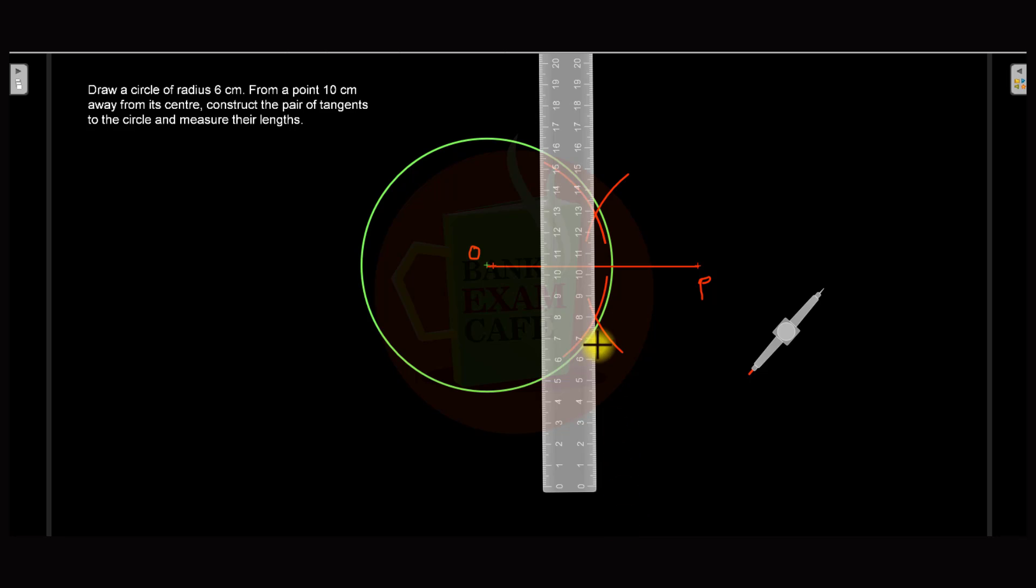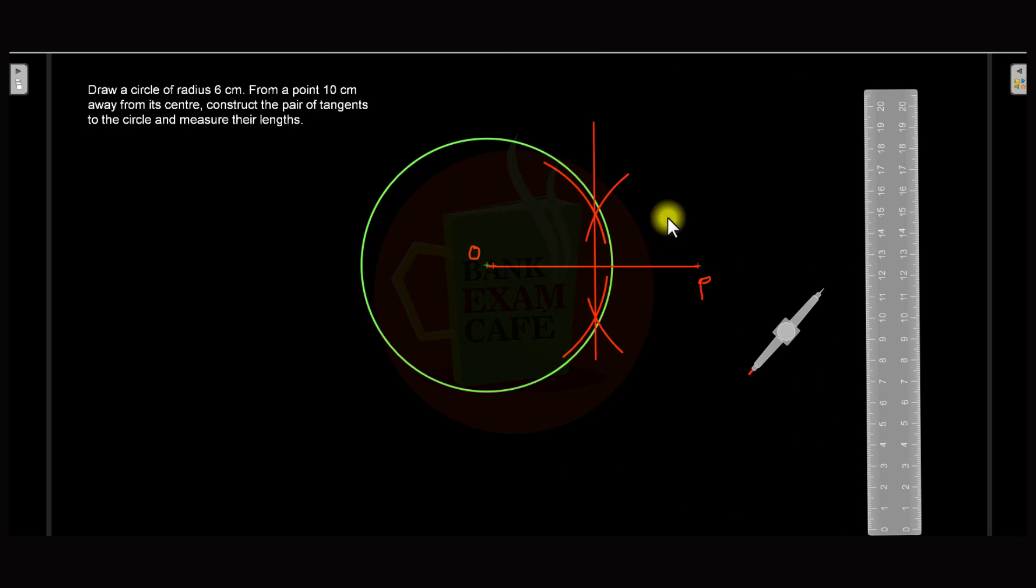So here we take the scale and draw a line segment passing through this point of intersection. Now we draw a line segment like this, and this is the bisector of line OP. Here this bisector intersects this line segment OP, let that point of intersection be O'.